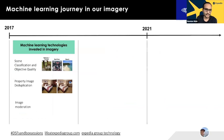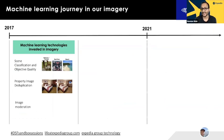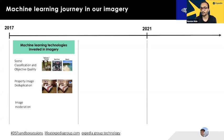Back in 2017, our focus was on investing in machine learning technologies and data tools to understand the type of imagery we have. We invested quite a lot in the computer vision space to understand image context, and applied that to remove near-duplication of our imagery — so when hotels upload very similar images, we avoid showing repetitive content to customers.